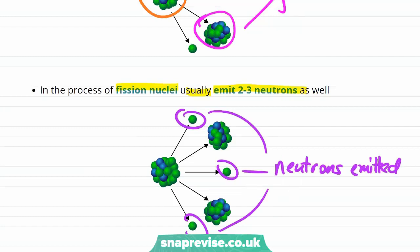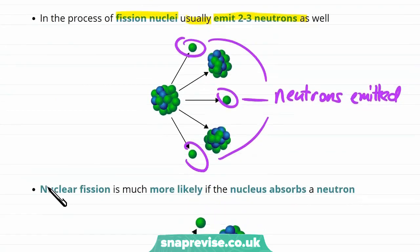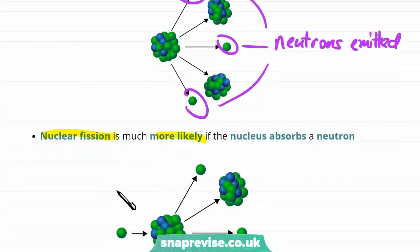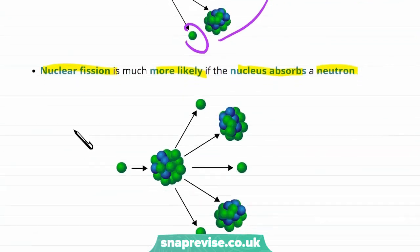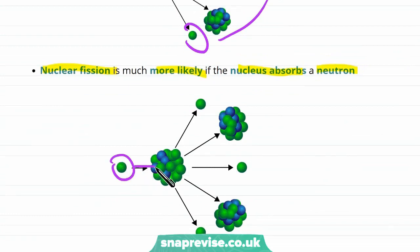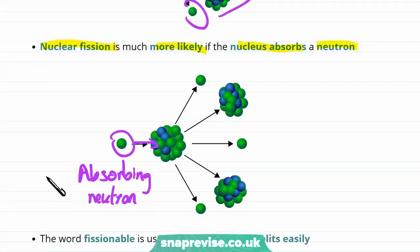So how do we make a nucleus go through this fission process? How do we make it split up? Well, nuclear fission is much more likely if the nucleus absorbs a neutron. So here's this neutron which is going into the nucleus and so the nucleus is absorbing a neutron. It turns out that doing this makes the nucleus much more likely to split up.